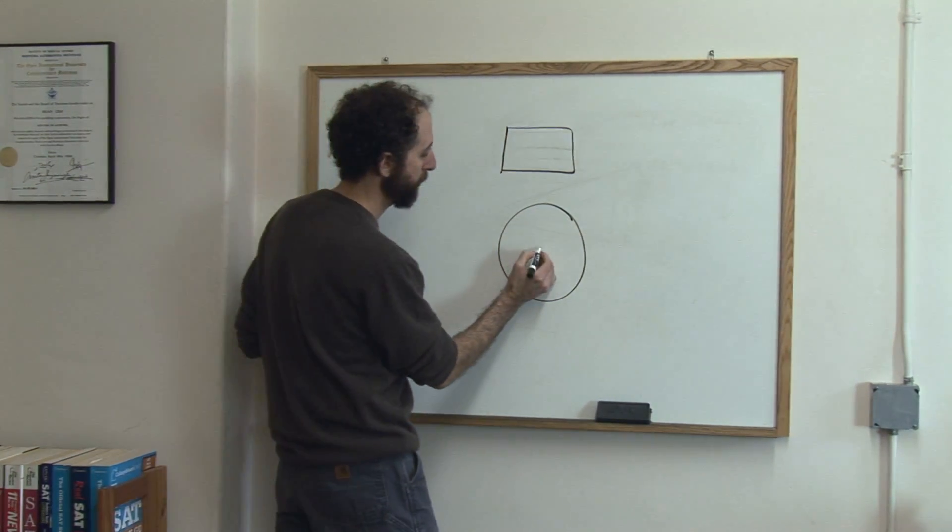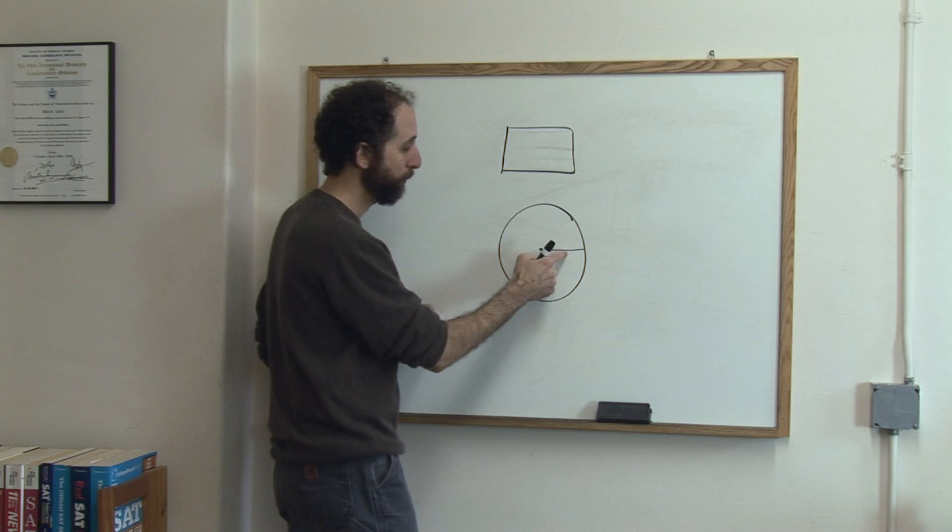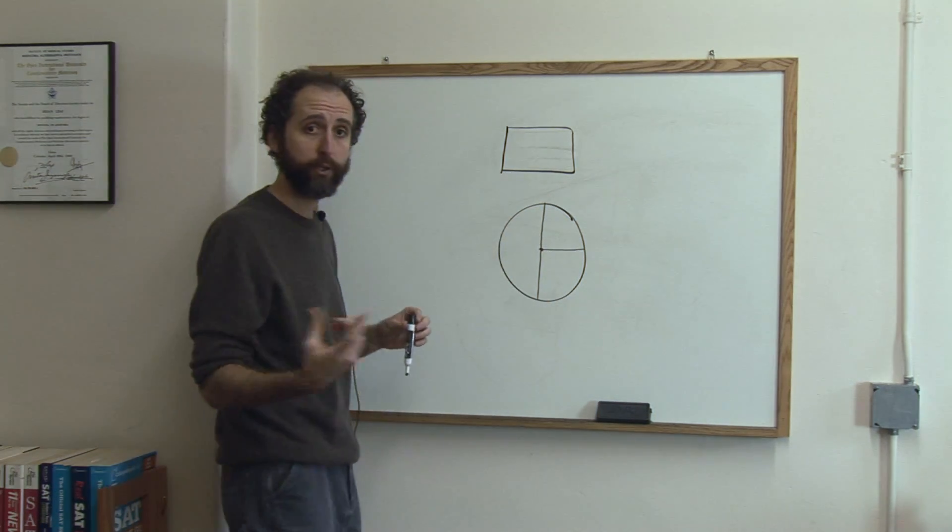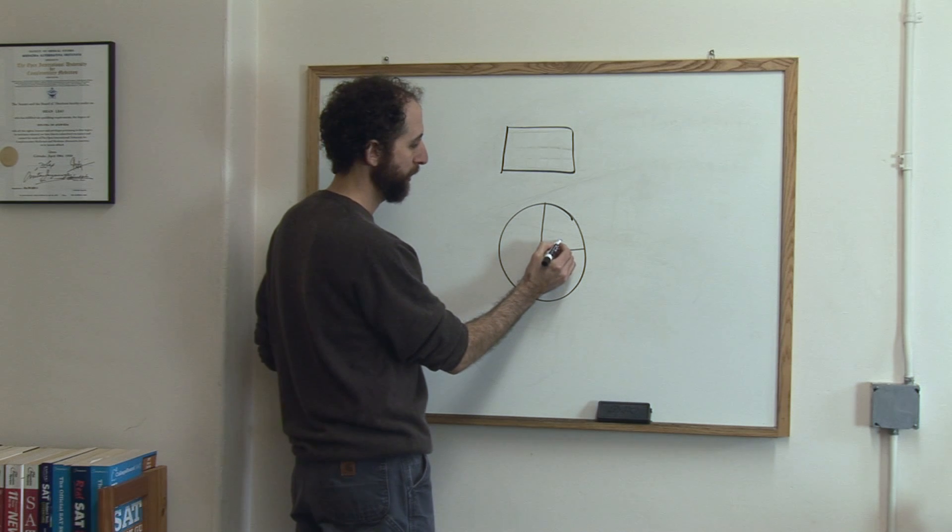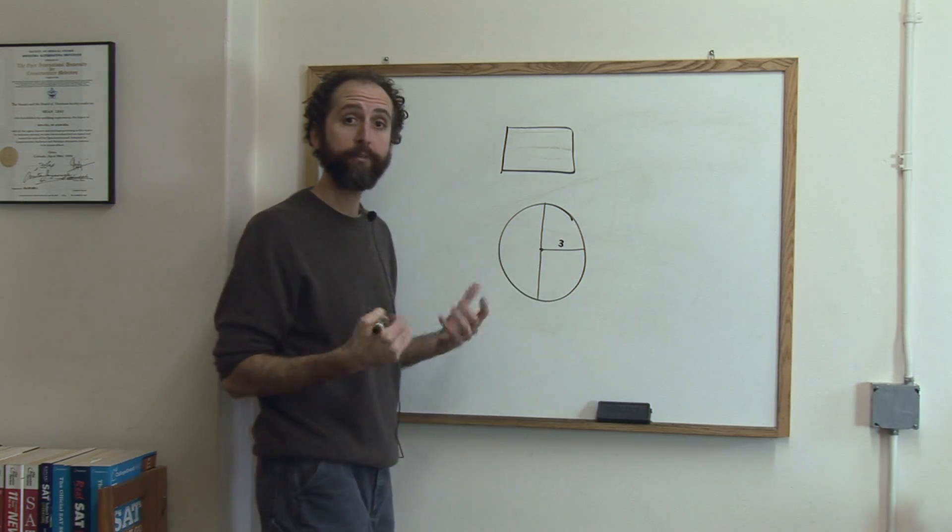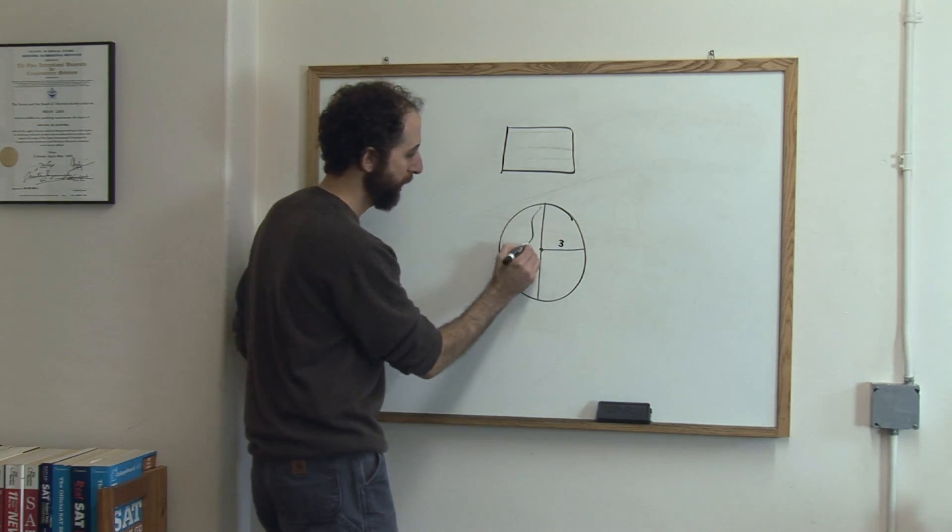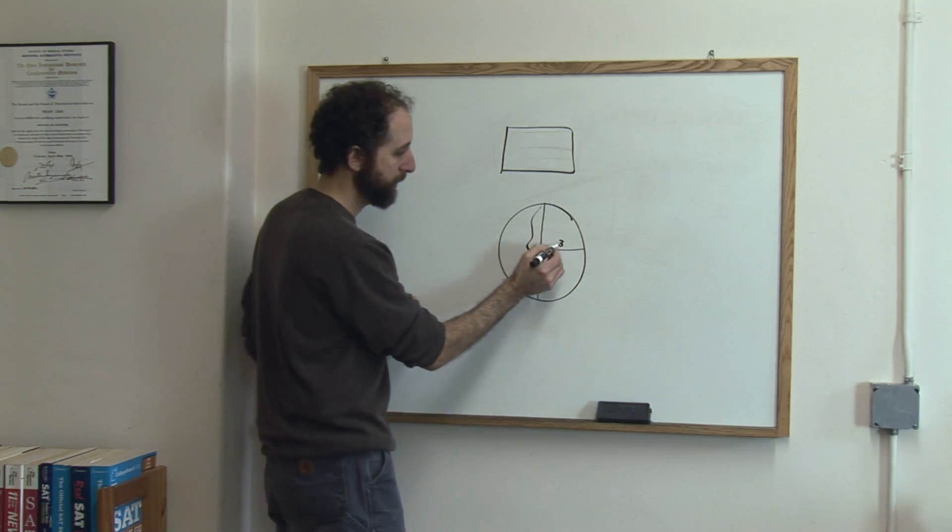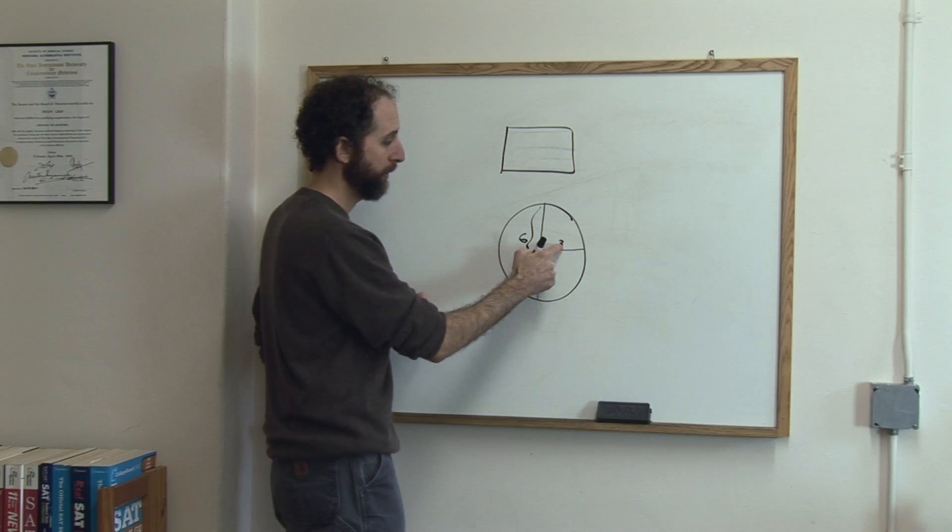So to figure out the circumference of a circle, we need to know the radius or the diameter. And either one works because actually you might know the radius, let's call it 3, is always half the diameter. In other words, the diameter, the length from one side to the other through the center, is always double the radius. So if that was 6, this would be 3.